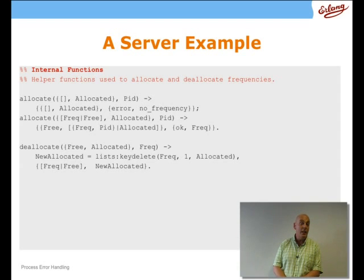In the case of deallocation, we use a library function from the lists library, which is used to, as you can see in the previous example, what happens is that we store frequencies which have been allocated together with the PID to which they were allocated. We use key delete to ensure that we delete the frequency and its allocated PID from the list of allocated frequencies, and then put the freed frequency into the list of unallocated frequencies.